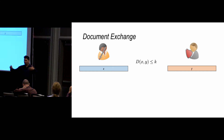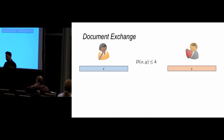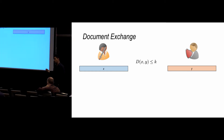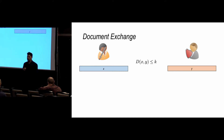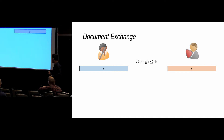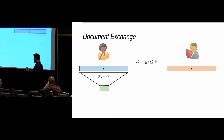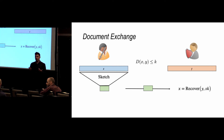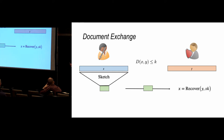Maybe you edited it, maybe something got corrupted — we don't know what the differences are, but we know we have two strings that are similar and we know roughly how similar they are. There's some distance between these strings. Now I would like to send you my version. I could send the whole string, but that's a huge amount of data, so we want to sketch our string down to something very small and just send you the sketch. Then you can combine the sketch with your string and some efficient procedure outputs my string.